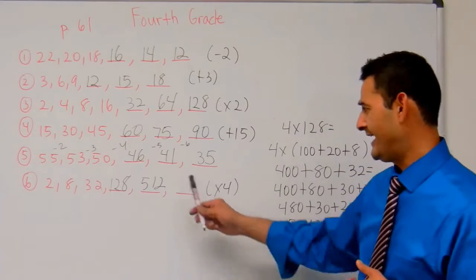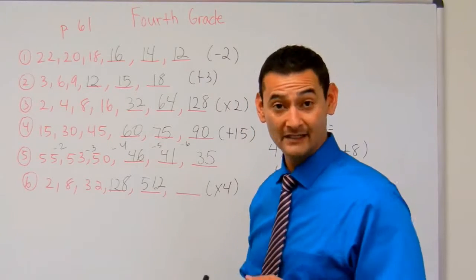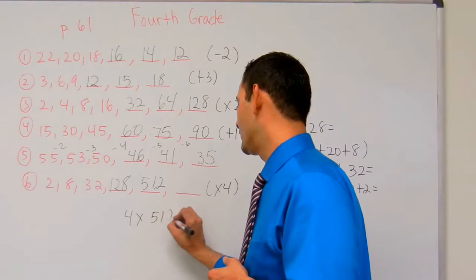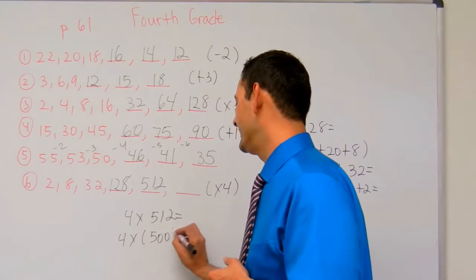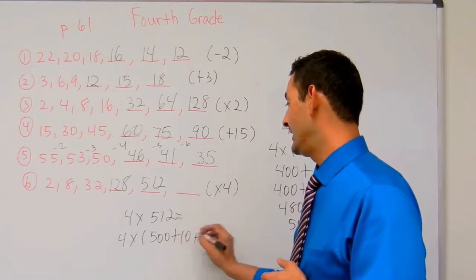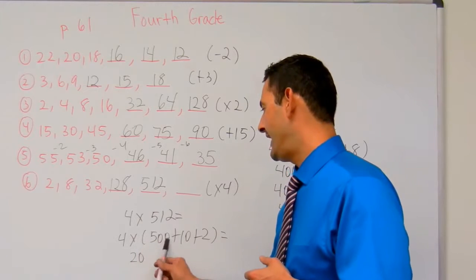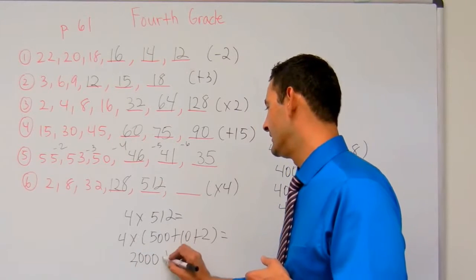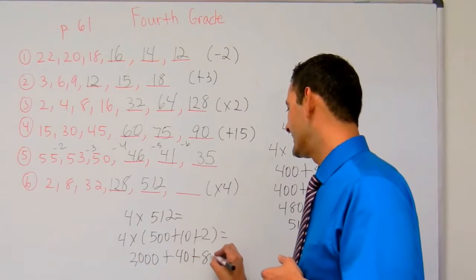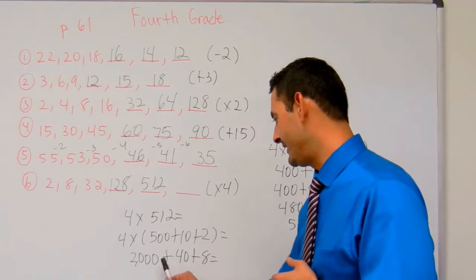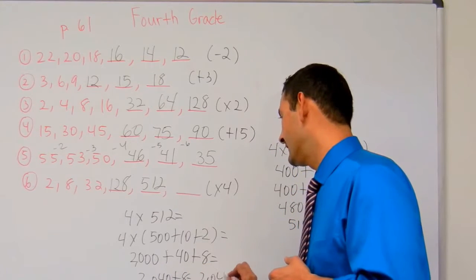And now, let's go ahead and take a look at 512 times 4. My goodness, these numbers are getting large, aren't they? It's a good thing we know the distributive property and place value. So let's do 4 times 512 equals. I'm going to do 4 times 500 plus 10 plus 2 equals. 4 times 500, 4 times 5 is 20, add the two zeros. Now I've got 2,000, plus 4 times 10, 40, plus 4 times 2, that's 8. 2,000 plus 40, that's 2,040, plus 8 more equals 2,048.